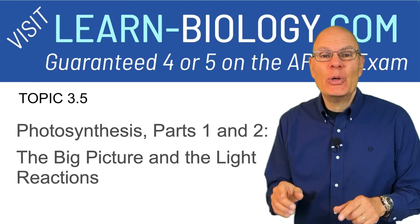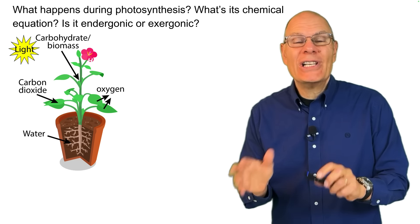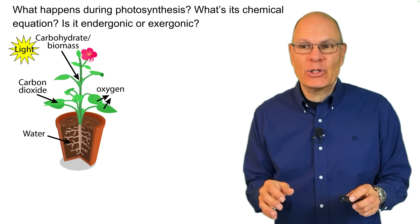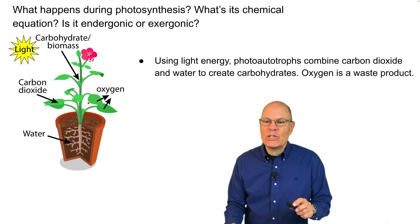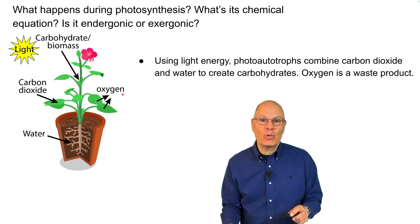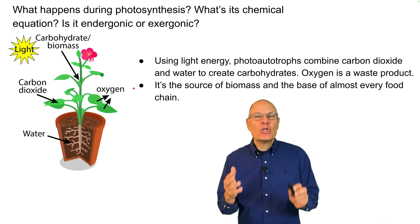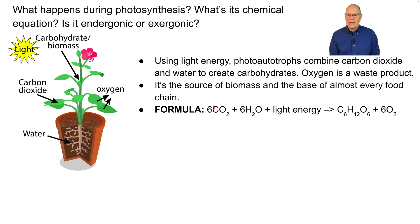Photosynthesis parts one and two: the big picture and the light reactions. In photosynthesis, using light energy, photoautotrophs like plants combine carbon dioxide and water to create carbohydrates, releasing oxygen as a waste product. It's the source of biomass and the base of almost every food chain. The formula is: 6CO₂ + 6H₂O + light energy → C₆H₁₂O₆ + 6O₂.